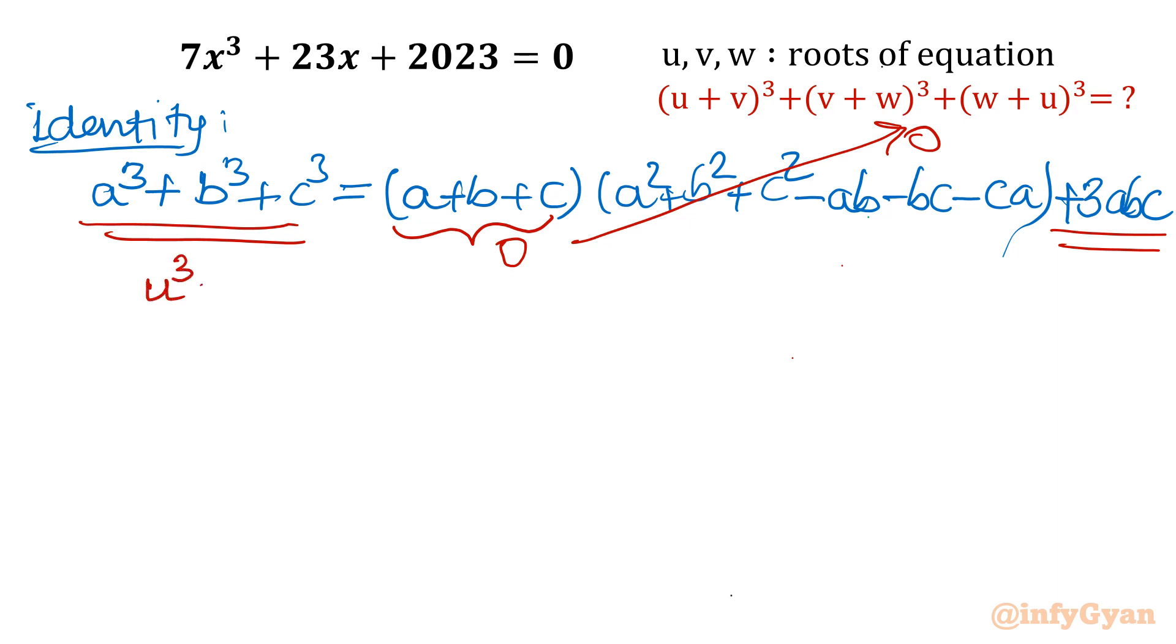So our roots were u, v, w. So in terms of that: u³ + v³ + w³ = 3uvw. And just we have calculated that uvw, this value is -289. You can check. So 3 times -289. So this value will be if you will take the product, -867.